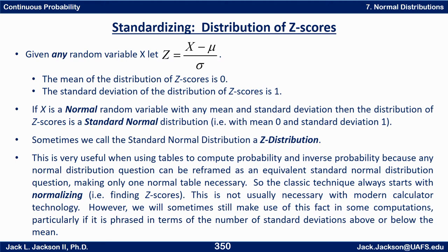We also have another special property true of normal distributions specifically: if we have a normal random variable with any mean and standard deviation, then the distribution of its z-scores is also normal. In this case it's normal with mean 0 and standard deviation 1, which means it's a standard normal distribution.